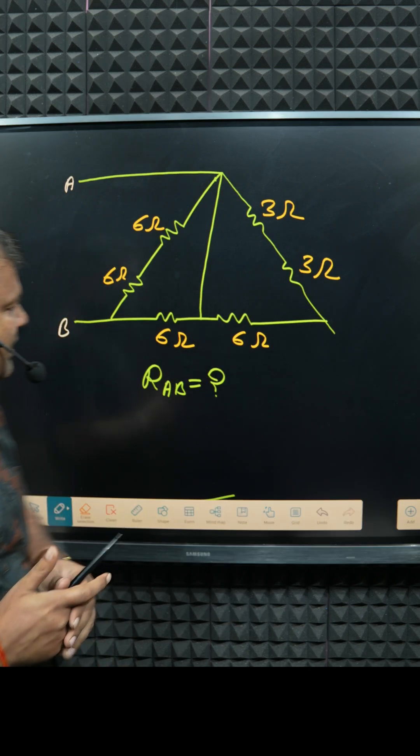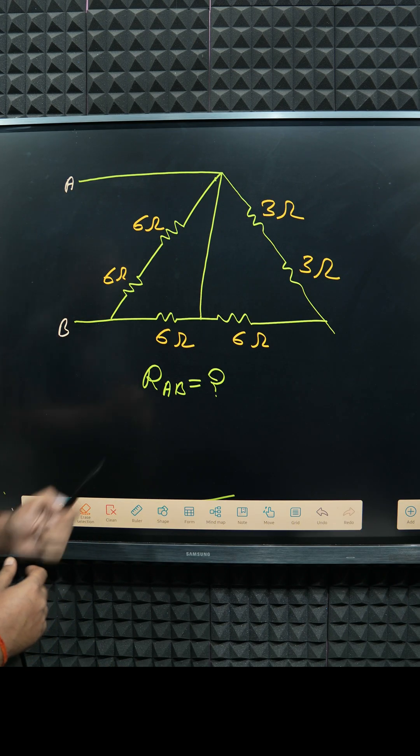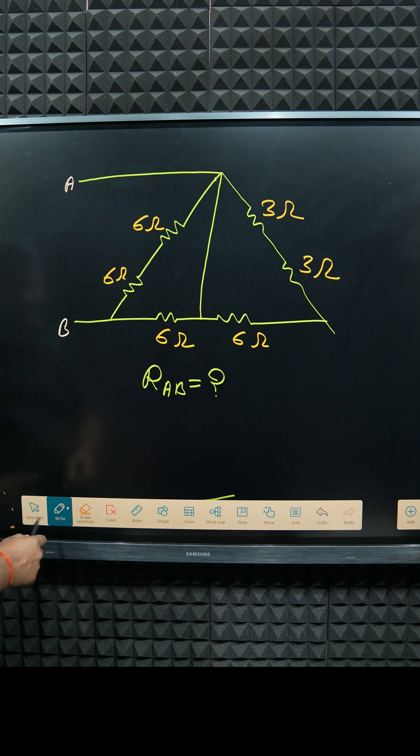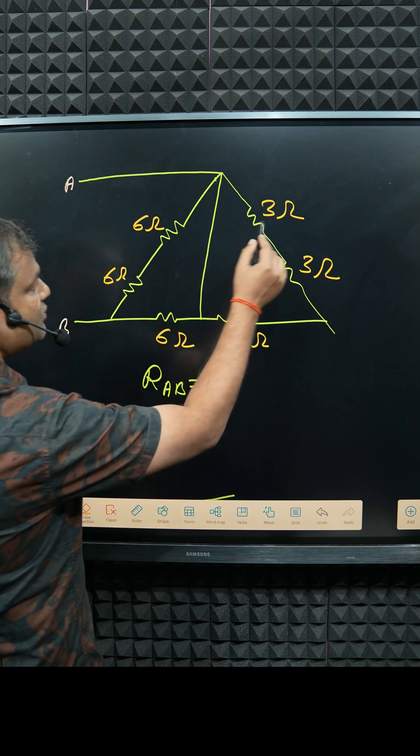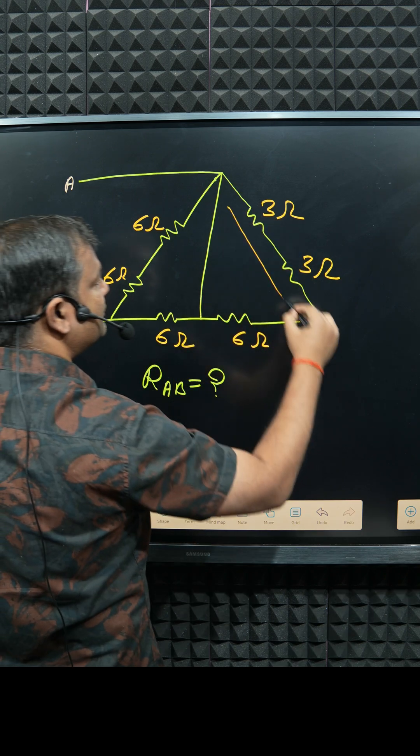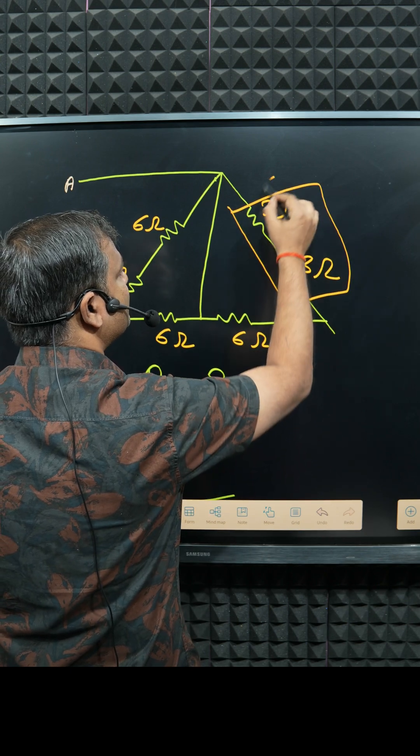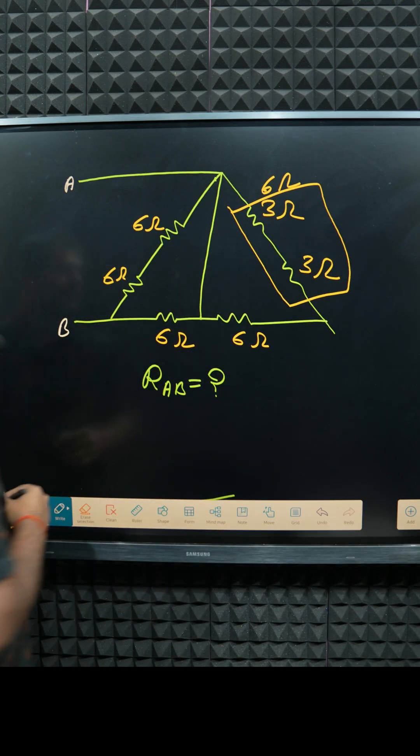How can we determine equivalent resistance between A and B terminals? Look here very carefully. First of all, if you see these two are in series, that is 6 ohm. Very simple. But if you see 6 and 6, that is 12.